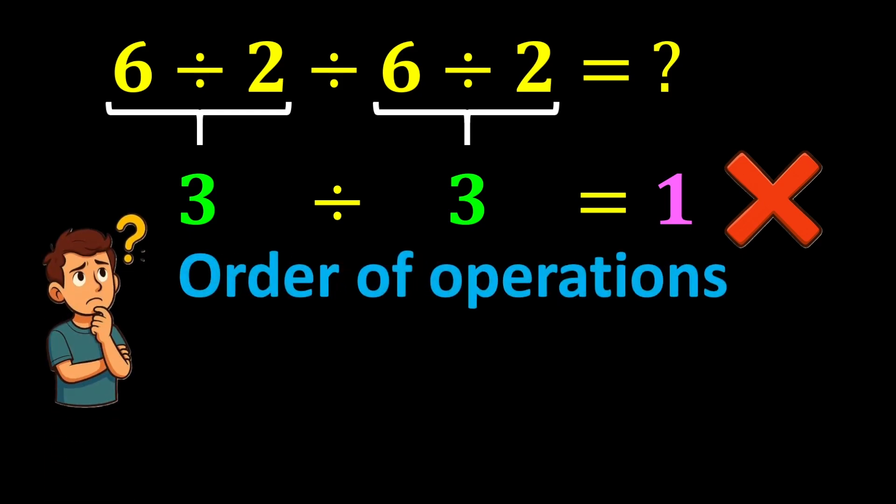The order of operations tells us that when we are faced with a mathematical expression, we are not allowed to start solving it from anywhere we like. Instead, we must perform the operations in a specific order to reach the correct answer. This is known as the correct order of operations.